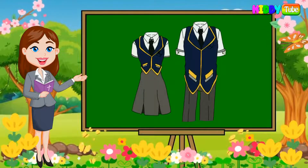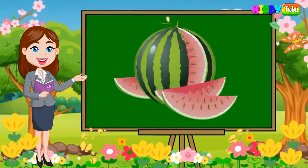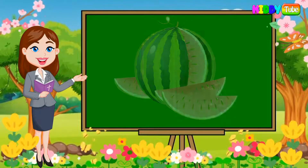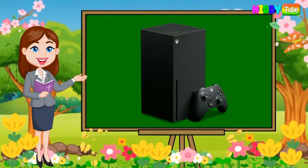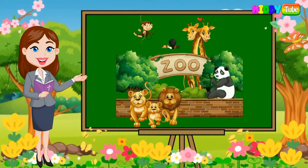U is for uniform. V is for village. W is for watermelon. X is for Xbox. Y is for yacht. Z is for zoo.